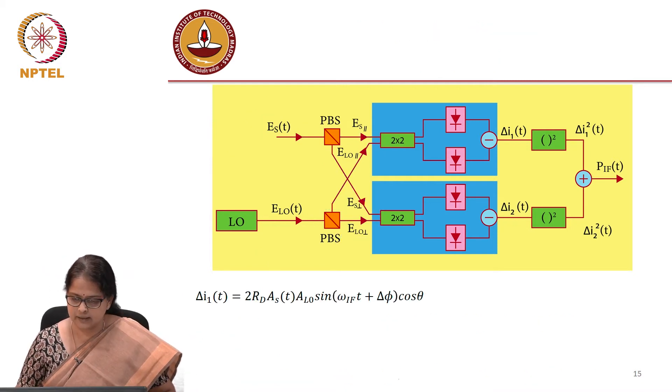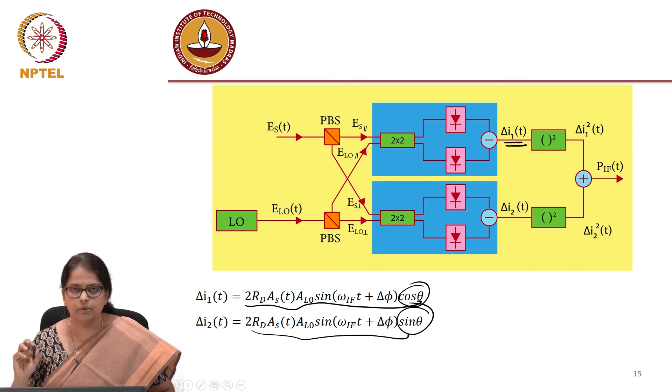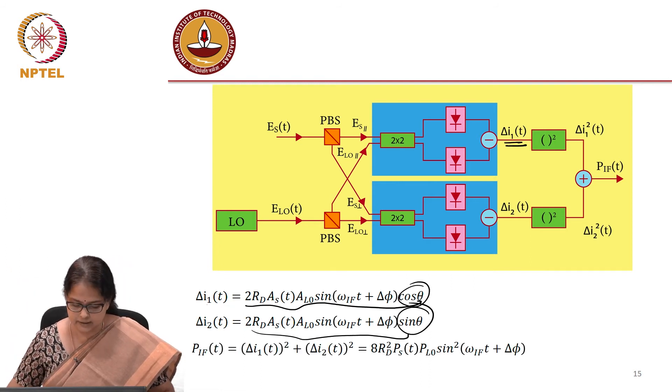What happens after this? Delta I1 t is here, we are trying to figure out. Delta I1 t is what we had derived earlier and delta I2 t is also the same thing. One is the cos theta component, the other one is the sin theta component. Otherwise there is no difference from the previous derivation.